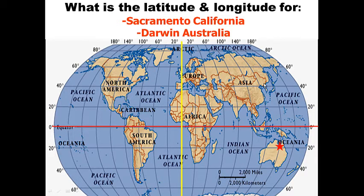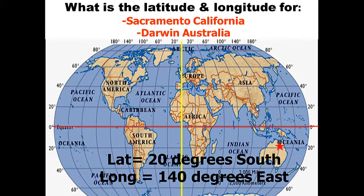Now Darwin, Australia. Tell me the latitude: is it 20 degrees north of the equator or 20 degrees south of the equator? Go ahead and write the latitude and longitude coordinates on your notes first. Hopefully you came up with 20 degrees south of the equator and 140 degrees east of the prime meridian — we're on the eastern side of the prime meridian. We're going to do two more.